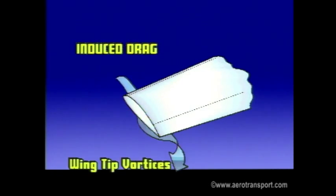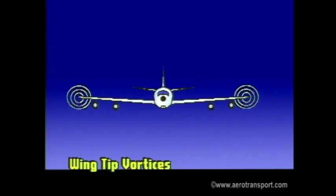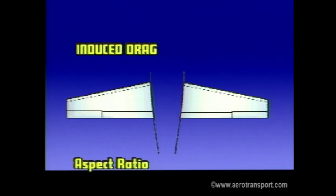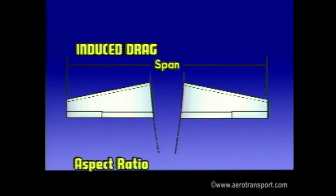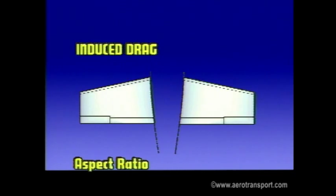Induced drag is a result of lift. High pressure air from under the wing flows to the lower pressure area above the wing, creating a rotary motion at the wing tips. This airflow is known as wing tip vortices, and this disturbed air causes induced drag. Induced drag is also influenced by the aspect ratio — the ratio of the wingspan to the mean cord. The higher the aspect ratio, the lower the induced drag.